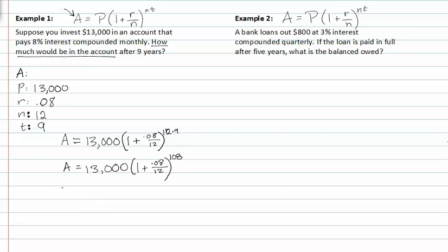Now I'll show you how to plug it into a calculator. We would write 13,000 and then we put a parenthesis and we put a 1 plus another parenthesis 0.08 divided by 12, close parenthesis, and then close the parenthesis again, then use a carat symbol or to the exponent 108.